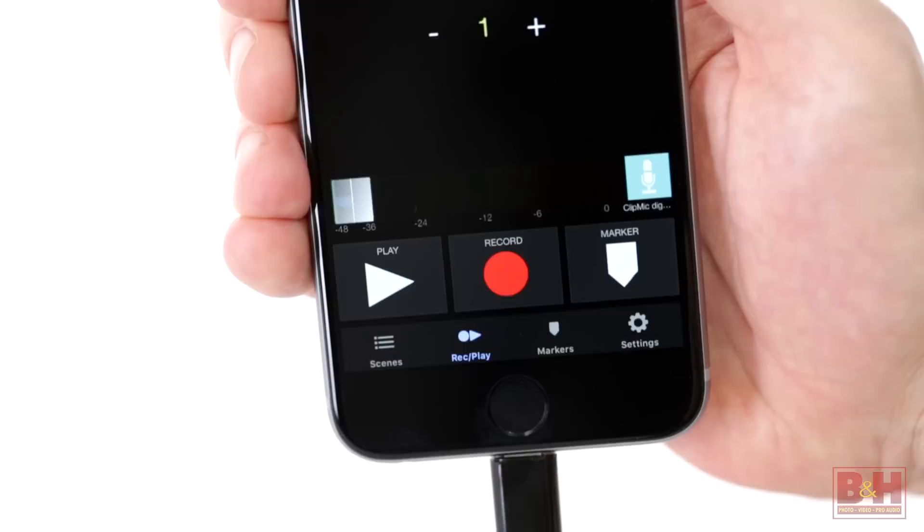Both Meta Recorder and Apogee's Maestro app allow you to set the mic gain and access DSP processing to shape the sound with limiting, compression and EQ.